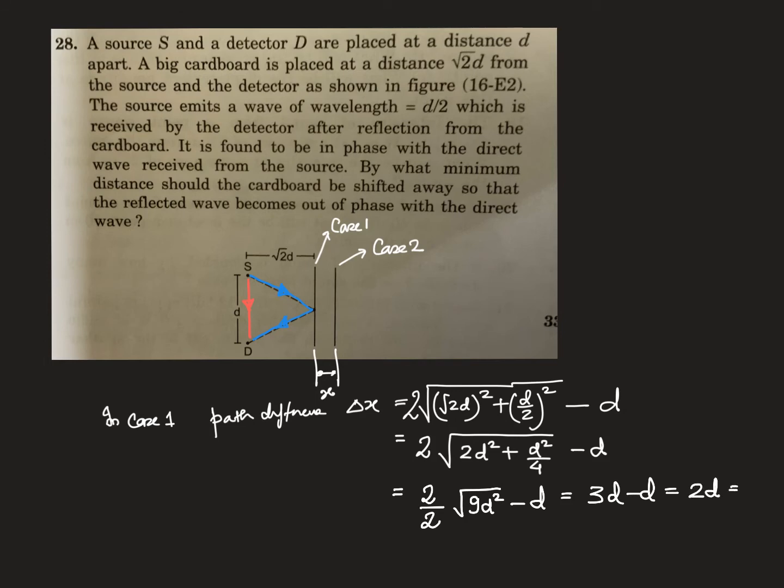2d means how much? Lambda is d/2, so that is 4 times lambda.